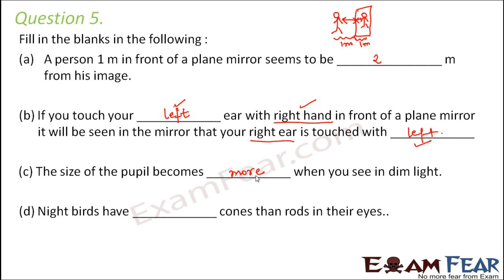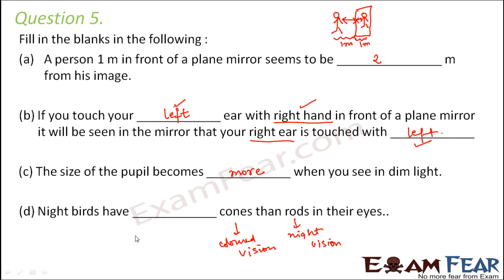Night birds have blank cones than rods in their eyes. Rods help in night vision and help to see objects in dim light, while cones help in colored vision or daylight vision. Night birds need to see at night, so they have more rods. Therefore, they have fewer cones than rods in their eyes.